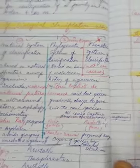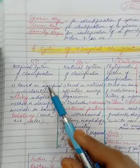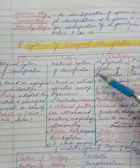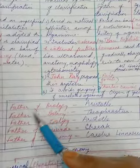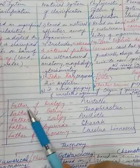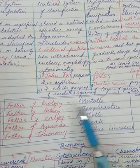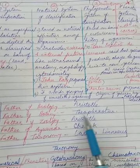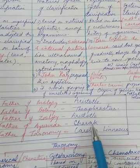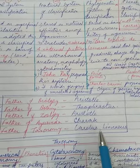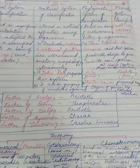Please learn the name of each system, who proposed it, and the criteria of classification. Some important names to learn by heart: father of biology — Aristotle; father of botany — Theophrastus; father of zoology — Aristotle again; father of Ayurveda — Charak; and father of taxonomy — Carolus Linnaeus. These will help you in future competitive questions.